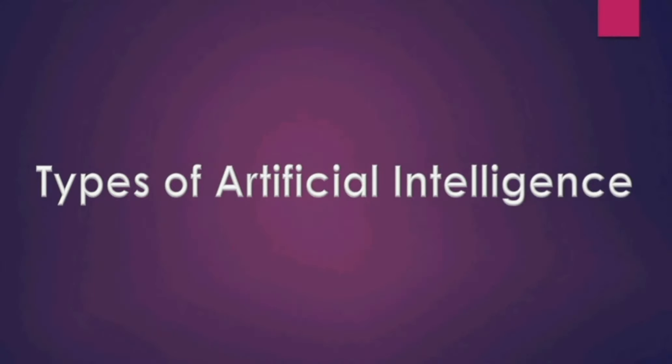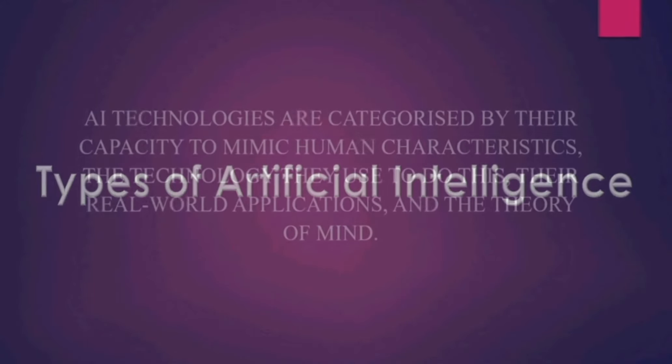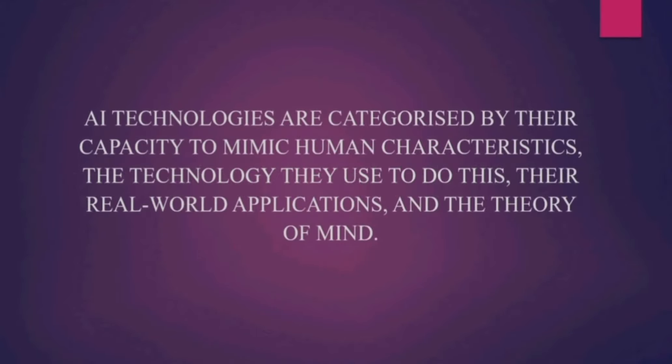Now let us see the types of artificial intelligence. AI technologies are categorized by their capacity to mimic human characteristics, the technology they use to do this, their real world applications, and the theory of mind.